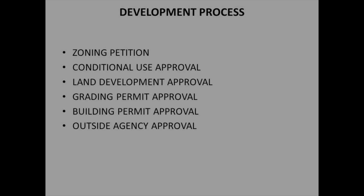The Typical Development Process can include a variety of different steps. Those steps can include, but don't always need to include, a Zoning Petition, Conditional Use Approval, Land Development Approval, Grading Permit Approval, Building Permit Approval, and Outside Agency Approvals. Following will be a brief summary of each one of those steps.